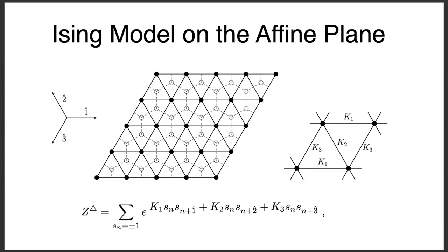Some of this has already been done in QCD. One affine transformation people use in QCD is stretching the time axis differently from the space axes — useful at finite temperature. They need coupling-constant matching, called Karsch coefficients, to find the relative quantum distance. So there are already examples where this kind of ratio-of-couplings calculation has been identified.